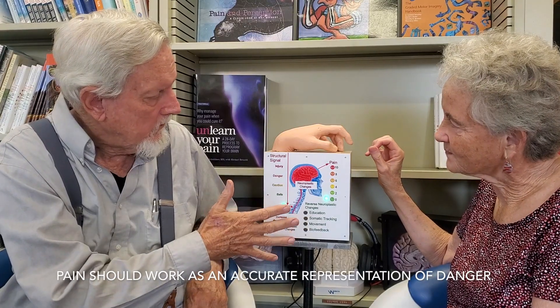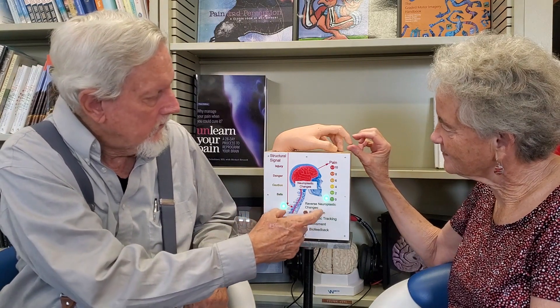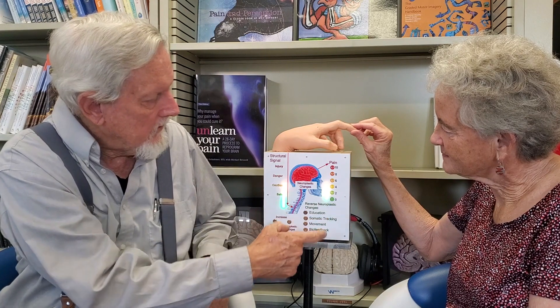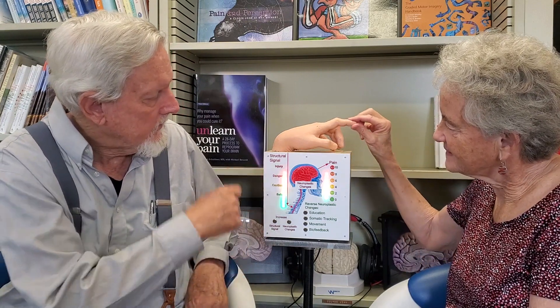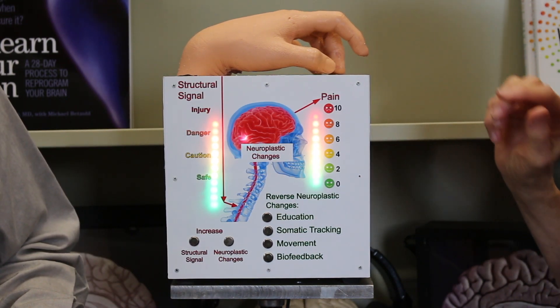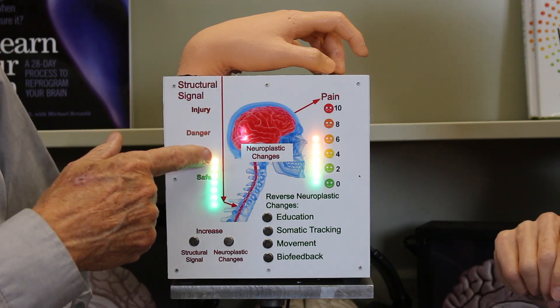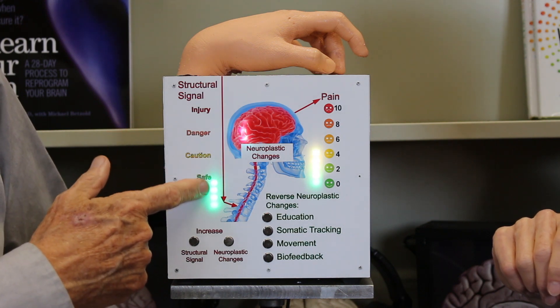This is how pain should work — it's an accurate representation of the danger. However, what can happen is if there's an injury, something different can occur. Raise the finger all the way up until you get an impact, then let it go. Now the signal doesn't go down right away because the injury has to heal. But gradually, over days, weeks, months, the injury heals and the signal goes down.